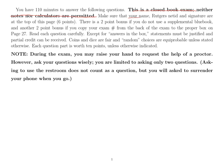I won't ask you your name, net ID, or signature, so there'll be no bonuses like that. You can use all the blue books you want at home. Statements do not need to be justified. This is still true: coins and dice are fair and random choices are equiprobable, unless stated otherwise.